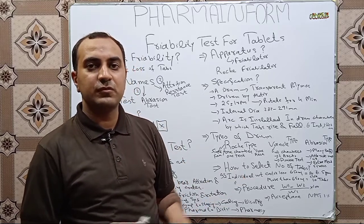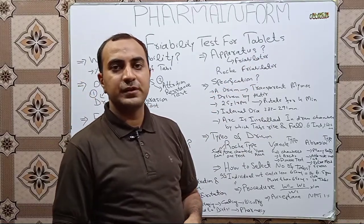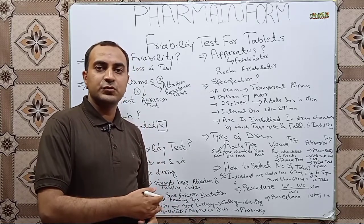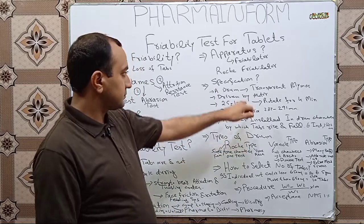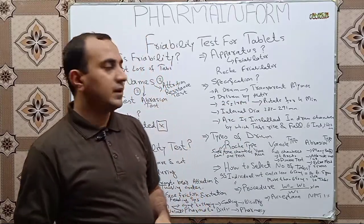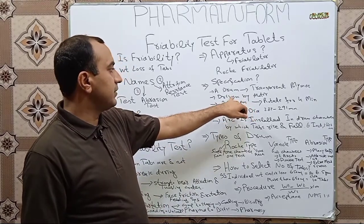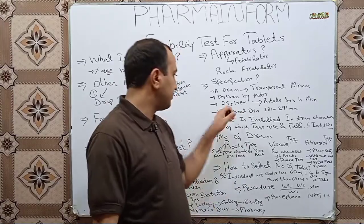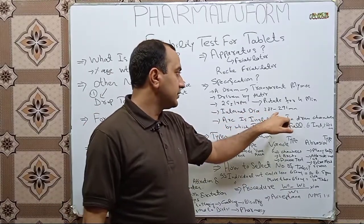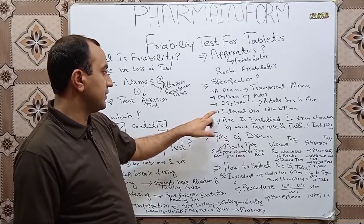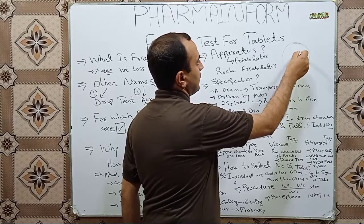What apparatus is used for the friability test? This is a commonly asked interview question. The apparatus used is known as a friabilator, and more precisely it is called a Roche friabilator. It has a transparent polymer drum or chamber in which tablets are placed. It is driven by a motor, rotates at 25 ± 1 RPM, has a running time of 4 minutes, and an internal drum diameter of 283 to 291 mm.